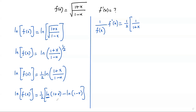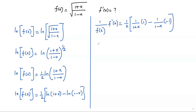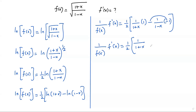By the chain rule, the derivative of (1+x) is 1 (the constant 1 becomes 0 and the derivative of x is 1). Similarly, the derivative of ln(1−x) gives 1/(1−x), and by the chain rule the derivative of (1−x) is −1 (the constant becomes 0, derivative of −x is −1). So: (1/f(x)) · f'(x) = (1/2) · [1/(1+x) + 1/(1−x)].